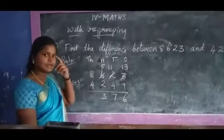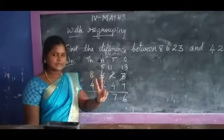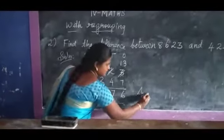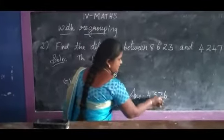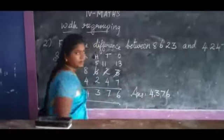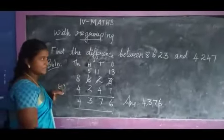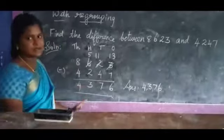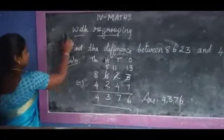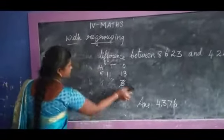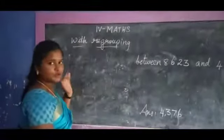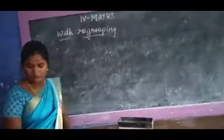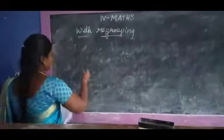Next, 8 subtract 4: 8 in the mind, 4 in the finger — 8 before, 7, 6, 5, 4. 8 is greater, so the answer is 4. So the final answer is 4,376.